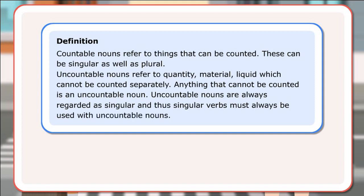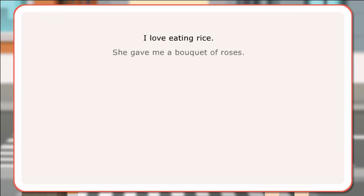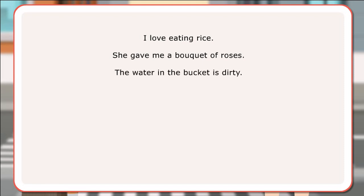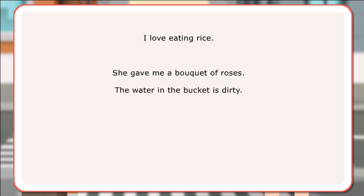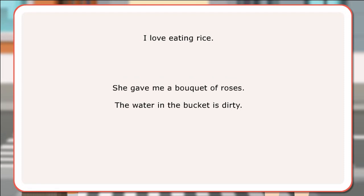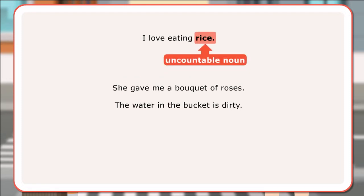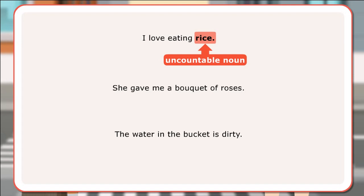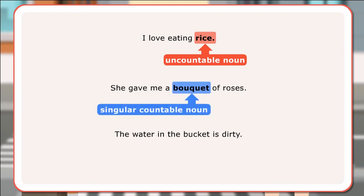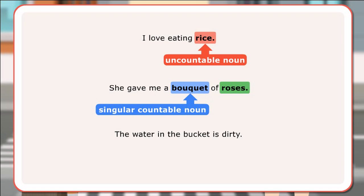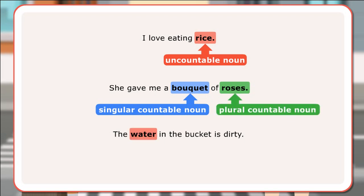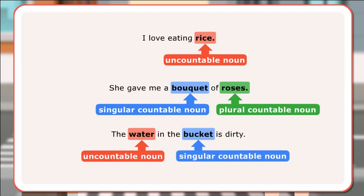Let us look at a few sentences. I love eating rice. She gave me a bouquet of roses. The water in the bucket is dirty. In the first sentence, rice is an uncountable noun. In the second sentence, bouquet is a singular countable noun and roses is a plural countable noun. In the third sentence, water is an uncountable noun and bucket is a singular countable noun.